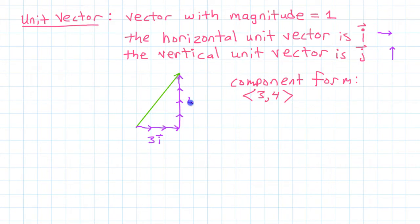We could look at this as 4j. So, in unit vector form, this same vector would be 3i plus 4j.